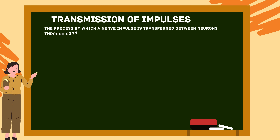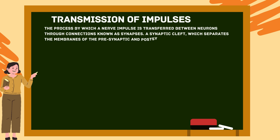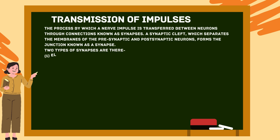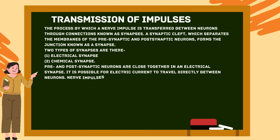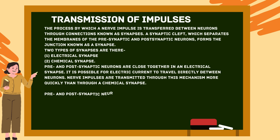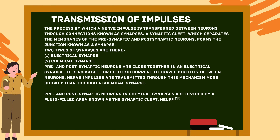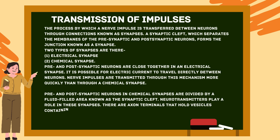Transmission of impulses refers to the process by which a nerve impulse is transferred between neurons through connections known as synapses. A synaptic cleft separates the membranes of the presynaptic and postsynaptic neurons, forming the junction known as a synapse. There are two types: electrical synapses and chemical synapses. In an electrical synapse, the pre- and postsynaptic neurons are close together, allowing electric current to travel directly between neurons — this is faster than a chemical synapse.